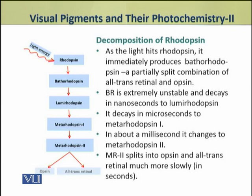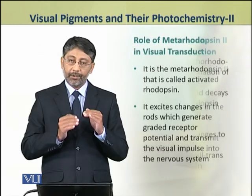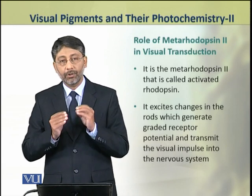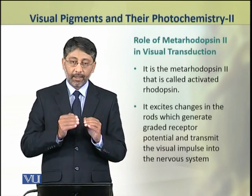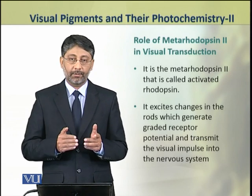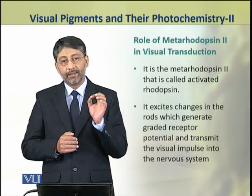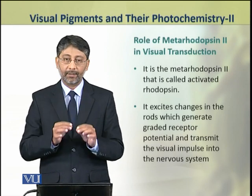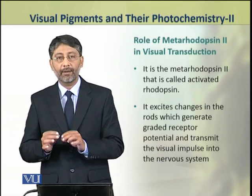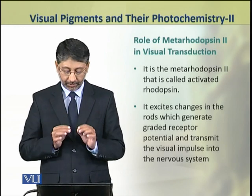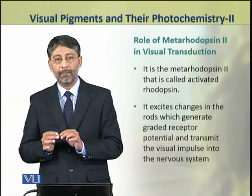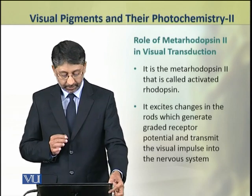The later steps occur much more slowly and take a few seconds. Metarhodopsin 2 is the activated rhodopsin. It excites changes in the rod cells that eventually generate a graded receptor potential and transmit visual impulses into the nervous system.